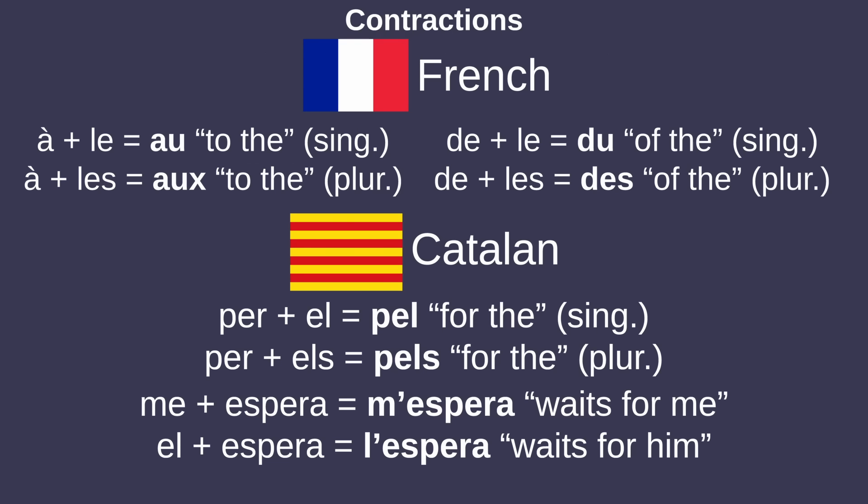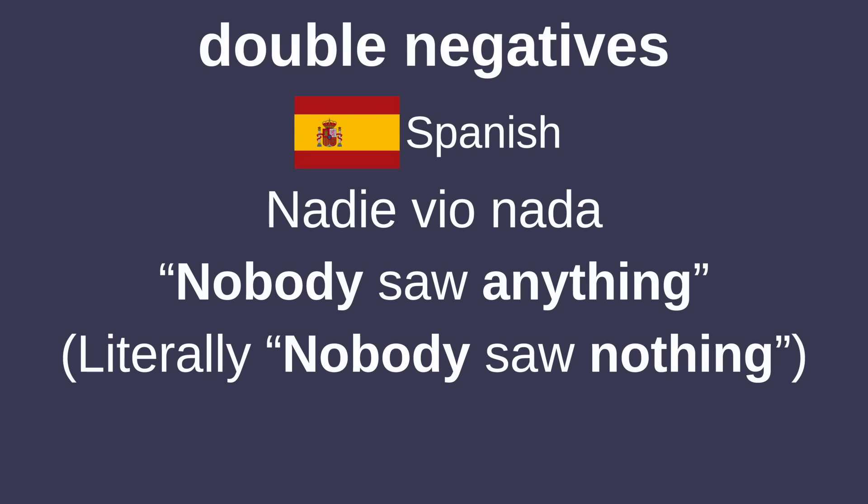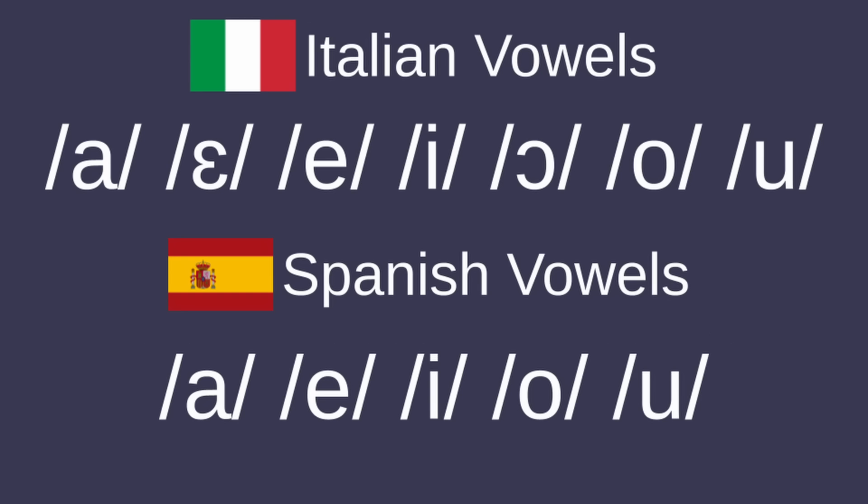Contractions are also very common across Romance languages, particularly with pronouns, articles, and prepositions, and most of the languages have double negatives. The consonants and vowels vary from language to language, but most have a seven-vowel system or a five-vowel system.